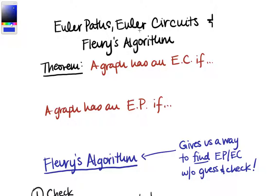First let's remind ourselves an Euler path is a path that uses every edge in the graph exactly once, doesn't repeat any edges. An Euler circuit is a circuit that does the same thing, uses every edge in the graph exactly once. Repeating vertices is okay, repeating edges is not okay.